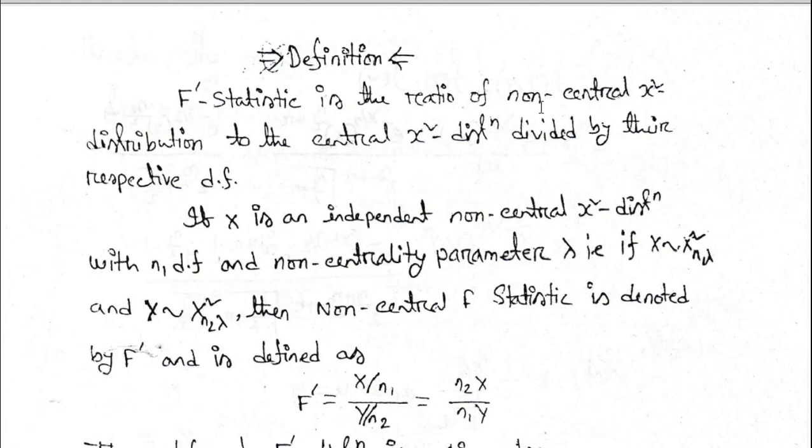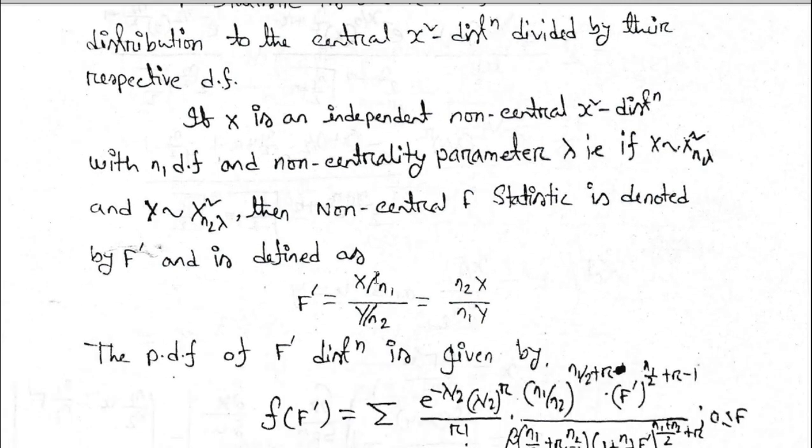is denoted by F prime and is defined as F prime equals X by n1 divided by Y by n2, which equals n2 X by n1 Y.